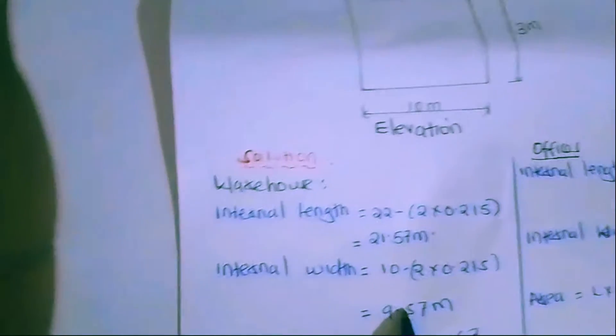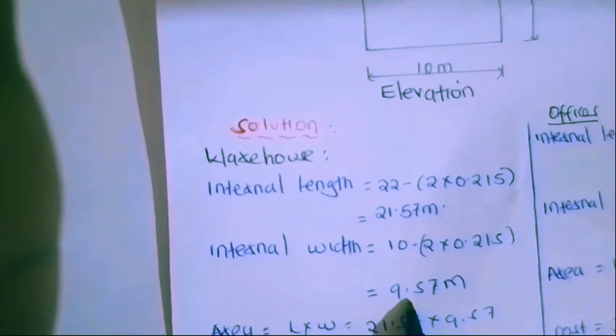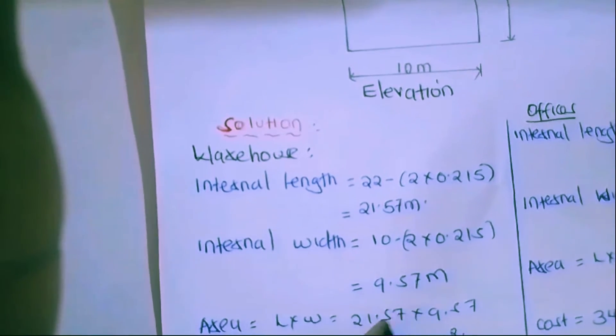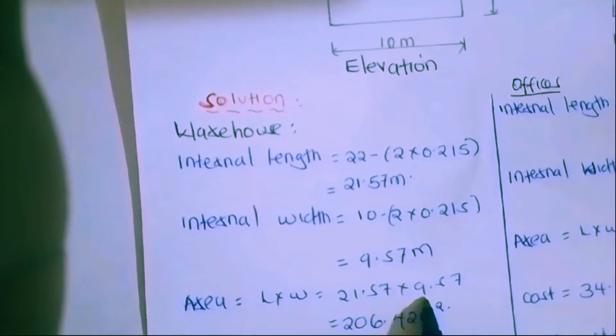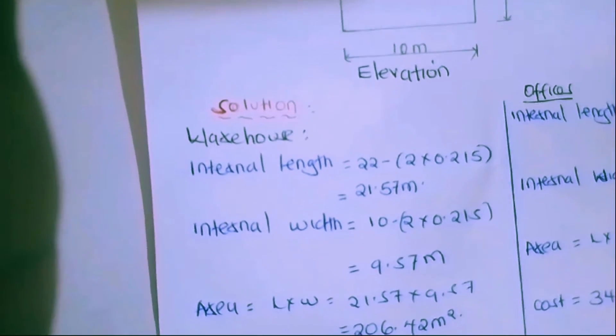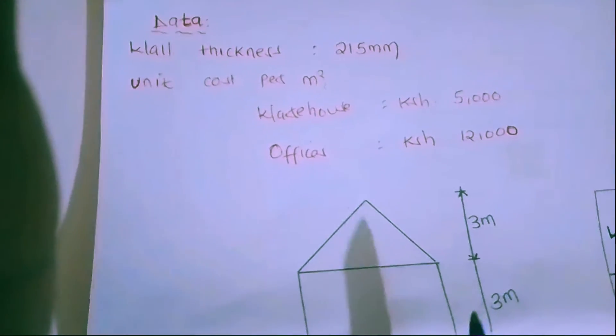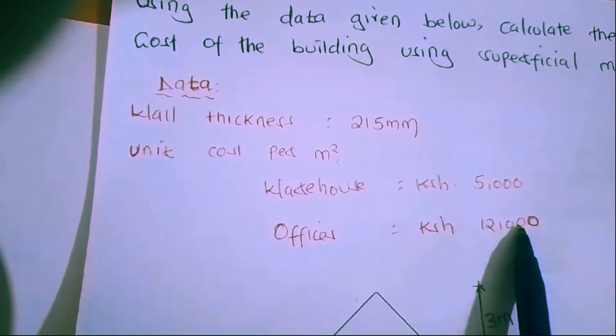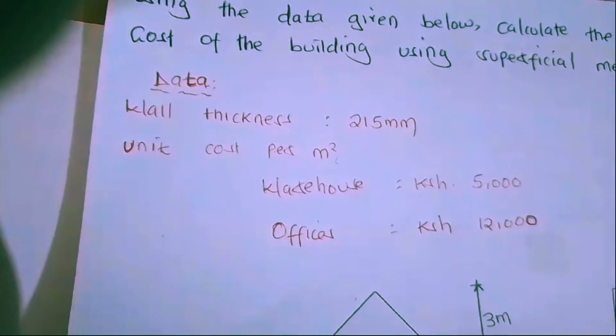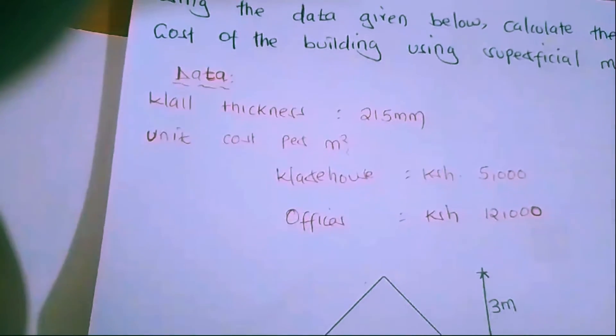The external width is 10 meters, so we subtract the two walls: 10 minus 2 times 0.215, giving us an internal width of 9.57 meters. Now that we have the internal length and width, we can calculate the area: 21.57 times 9.57 gives us 206.42 square meters. We were given the unit cost per square meter — for the warehouse it is 5,000 and for the offices it is 12,000.